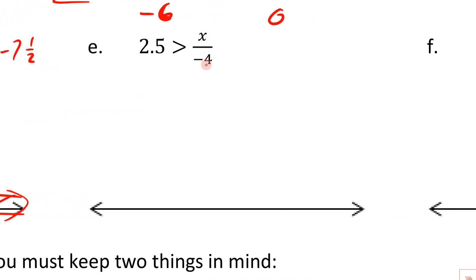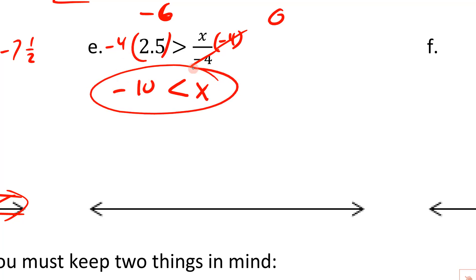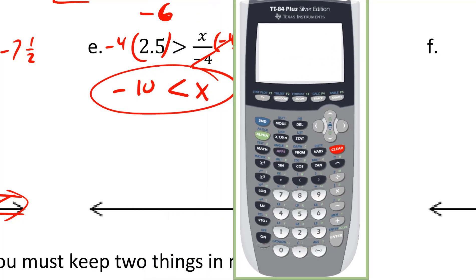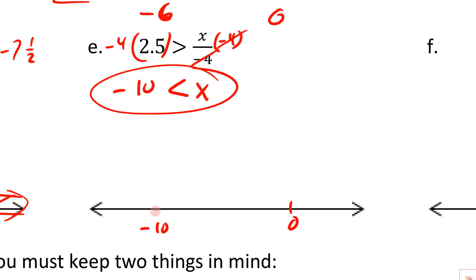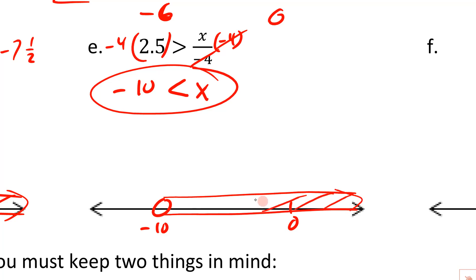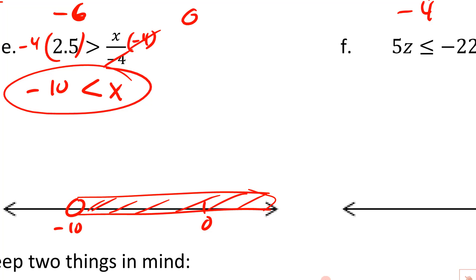This one is x divided by negative 4. To undo that, multiply both sides by negative 4 — those cancel. But remember, we multiplied both sides by a negative, so switch the direction of the inequality. Negative 4 times 2.5 equals negative 10, so circle that. Put 0 and negative 10 on the number line, leave the circle open, and read from the variable — x is greater than negative 10, so shade to the right.